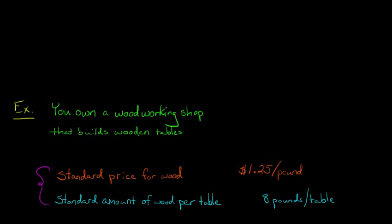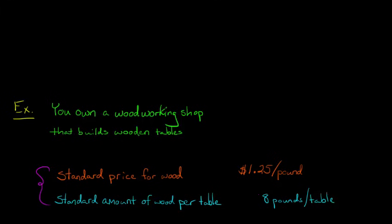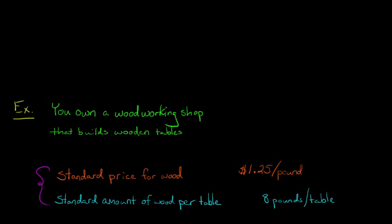We've got a couple of standards here. We've got a standard price of $1.25 a pound — that means you look ahead and say, I really think I should be paying no more than $1.25 a pound for wood. And then you also need a standard quantity: how much wood should it take to build the table? We're going to say 8 pounds of wood is sufficient to build the table. These are the standards we set at the beginning of the period that we want to compare our performance to.